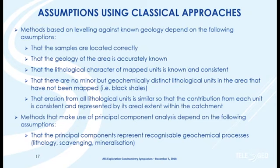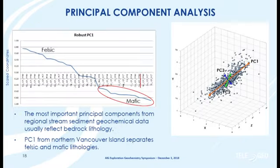A different approach is to just look at the data and internally derive what those lithological controls are. The assumption we have to make there is that we can interpret principal components. Basically, we're looking at clouds of data, looking at stretching within those clouds, and then looking at different axes orthogonal to it. In regional data sets, the first principal component is typically lithologically controlled.